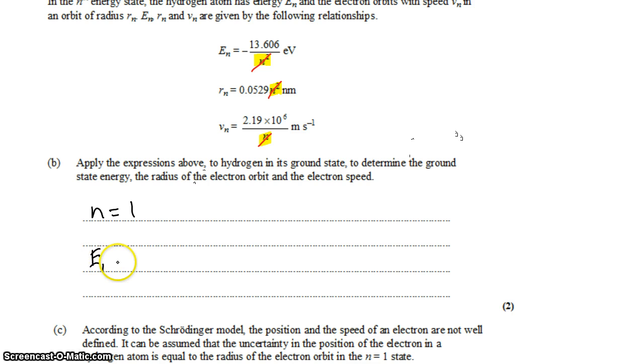Which means that the energy in the first shell is just negative 13.606 eV. The radius in the first shell is 0.0529 nanometers. And the velocity in the first shell is 2.19 times 10 to the sixth meters per second.